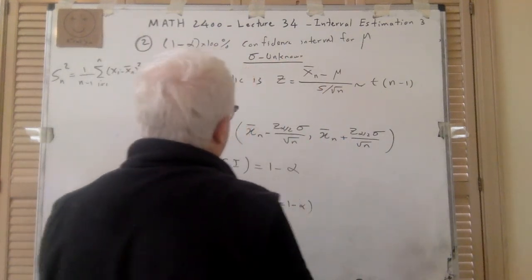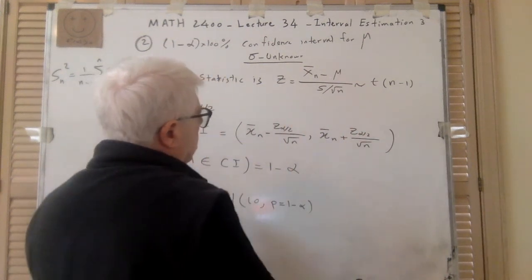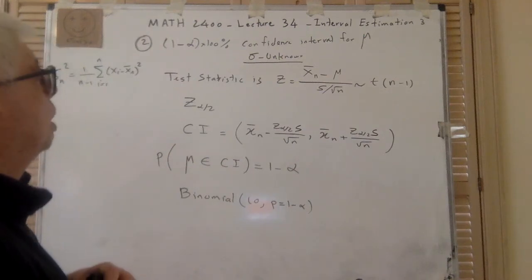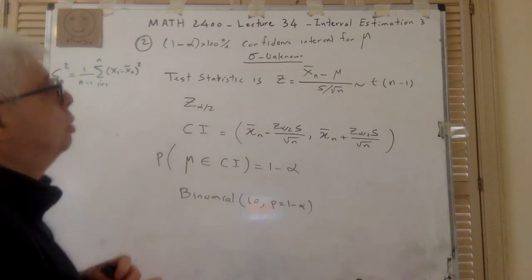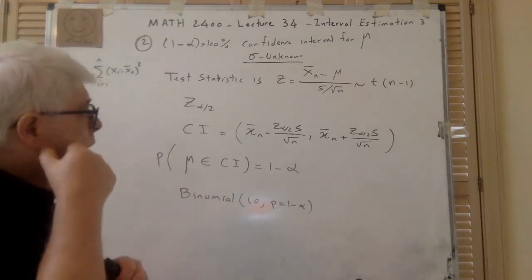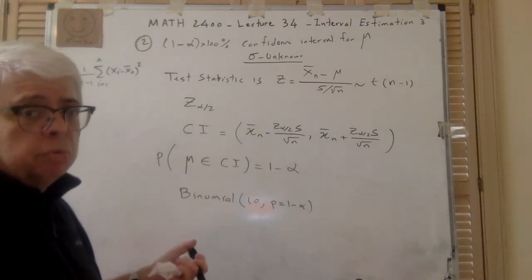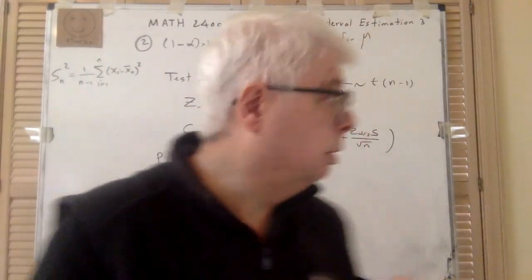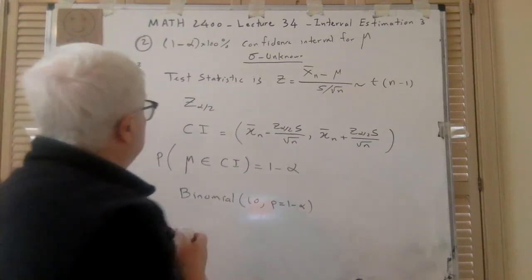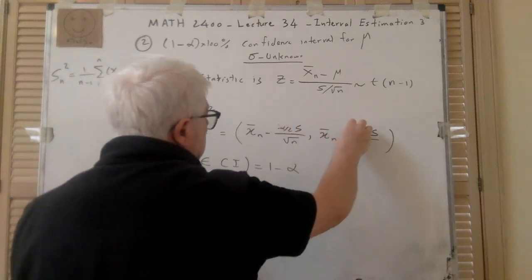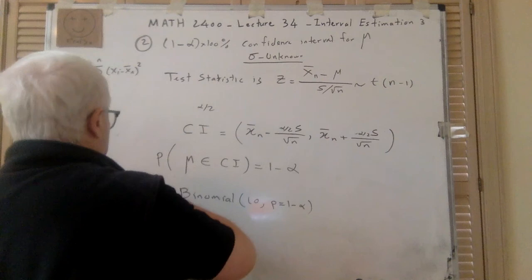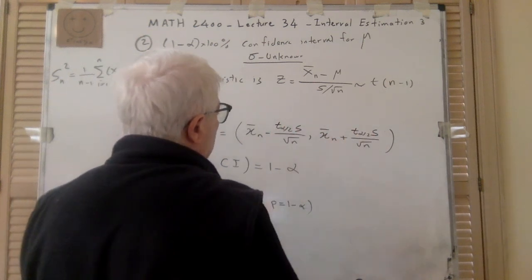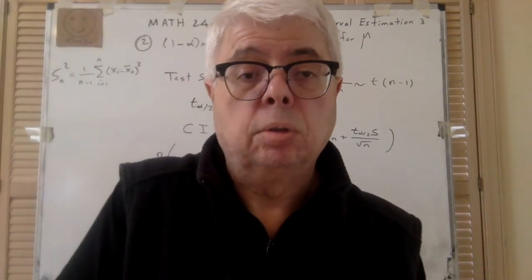It's basically the same formula except instead of σ we are using S. That is the second situation — this is the situation that usually happens. You can assume that you know sigma, but most of the time you don't, so you find S and use the T-distribution. You are finding t_{α/2}, not z_{α/2} — so instead of Z you have T.